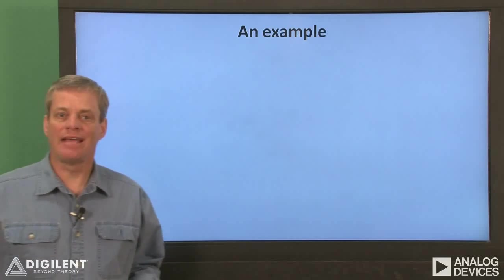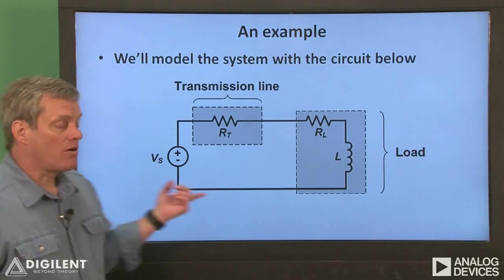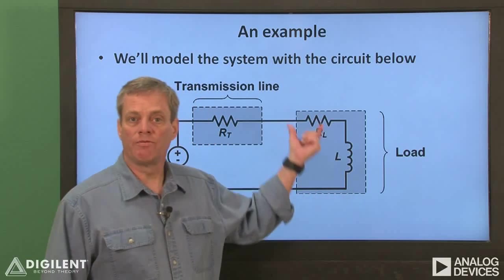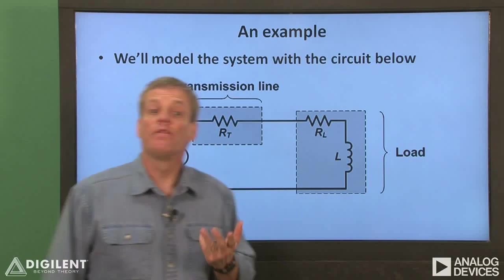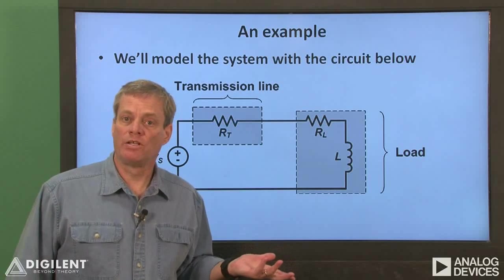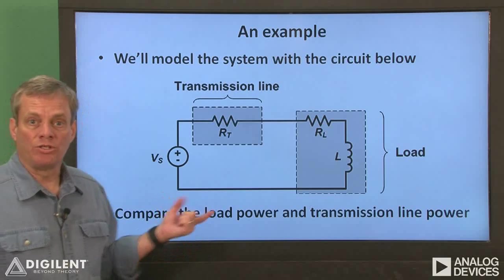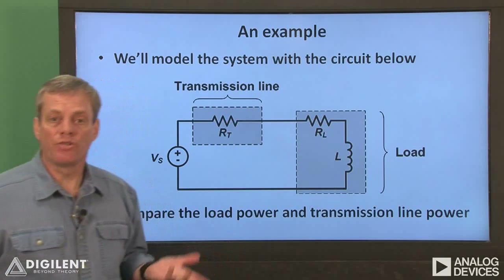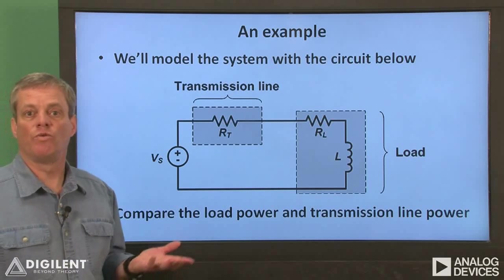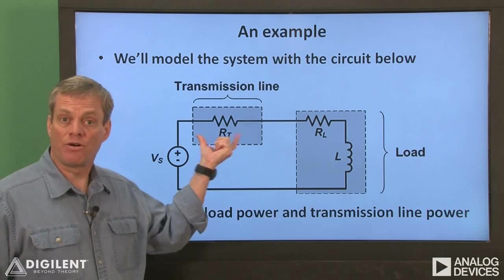Now let's look at an example that we can implement to get some insight into what's going on. Specifically, our implementation of the previous system has a load which consists of a resistor and an inductor. The case of an inductive load is considerably more common than a capacitive load, so this is a fairly realistic example. What we'll do is create a circuit which looks like this system, measure the voltages and currents in the circuit, and compare the average power delivered to the load with the power dissipated in the transmission process by this resistor R sub T.